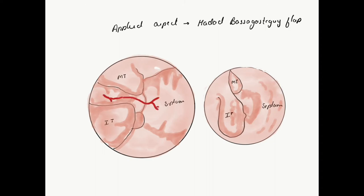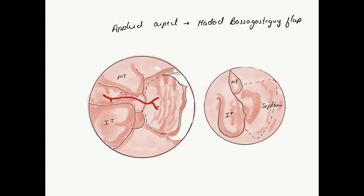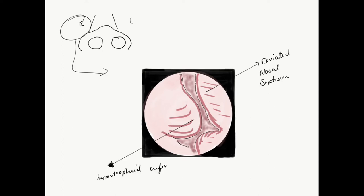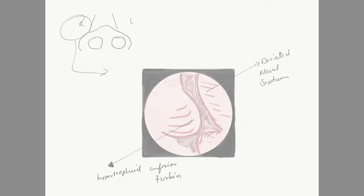Whenever there is a transnasal approach, we need a Hadad flap for skull base reconstruction. It is based on the sphenopalatine artery and is a pedicled flap. The incision is placed in the floor near the nasal spine, and superiorly the incision is placed 1-2 cm below the roof to protect the olfactory epithelium. A subperichondrial and subperiosteal dissection is done, and it is usually kept in the choana for later use. At times the septum can be deviated to one side, and the roomy area can have a hypertrophied inferior turbinate, all of which must be considered before applying transnasal approaches.